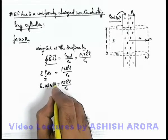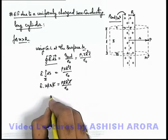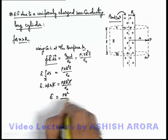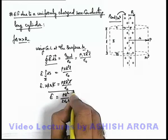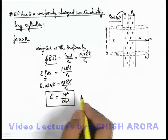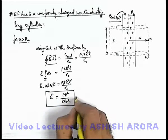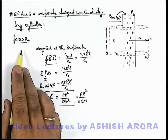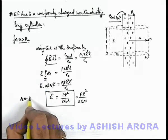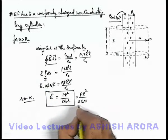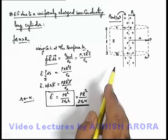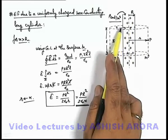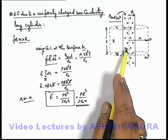Here π and l cancel out, and the value of electric field we get is E = ρr² / (2ε₀). We can also write this as E = ρr² / (2ε₀x), since x is greater than r and we can replace the variable accordingly. This is the electric field in the outside region of a long cylinder of radius r charged with a uniform volume charge density ρ coulombs per meter cube.